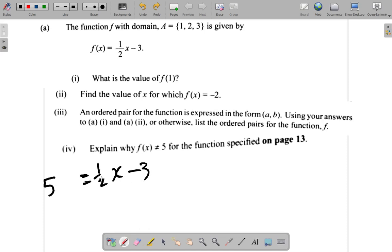And then multiply by 2 to get rid of the half. So, if I add 3, add 3, negative 3 plus 3, that's 0. So no more of this. 5 and 3 is 8. 8 is equal to half x.